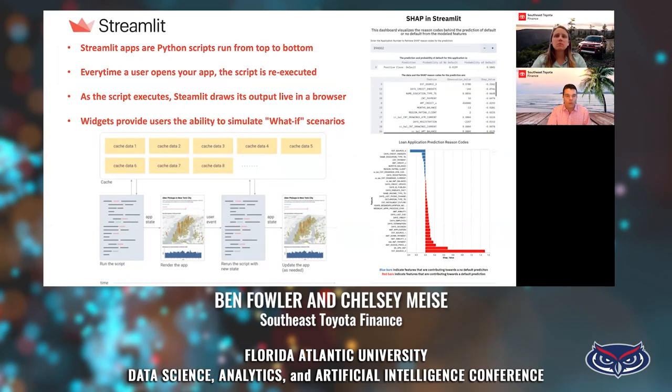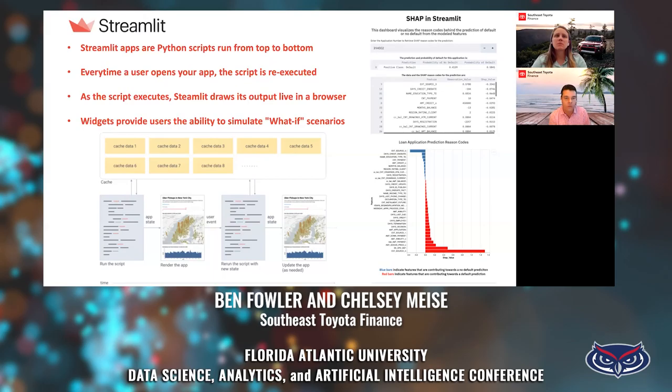We've talked a lot about model interpretability. Now we'd like to conclude with a demonstration of how you can tie model interpretability with Streamlit. Streamlit is a very exciting user interface introduced at PyData Los Angeles last December. Streamlit apps are Python scripts run from top to bottom. Each time a user opens the app, the script is re-executed, and Streamlit draws its output live in a browser. There is widget functionality that allows the user to provide simulations and do what-if modeling.